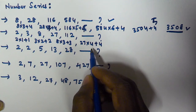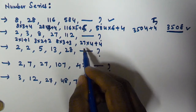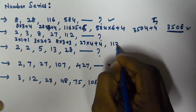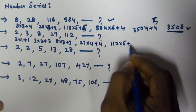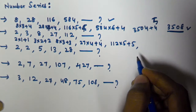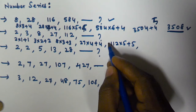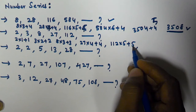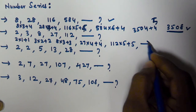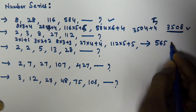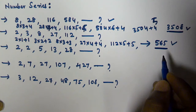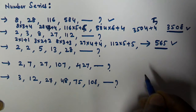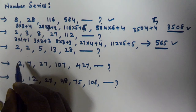Next: 27 times 4 plus 4. 27 times 4 is 108, plus 4 is 112. And 112 times 5 plus 5: 100 times 5 is 500, 12 times 5 is 60, giving 560, plus 5 is 565. So the next number in the series 2, 3, 8, 27, 112 is 565.